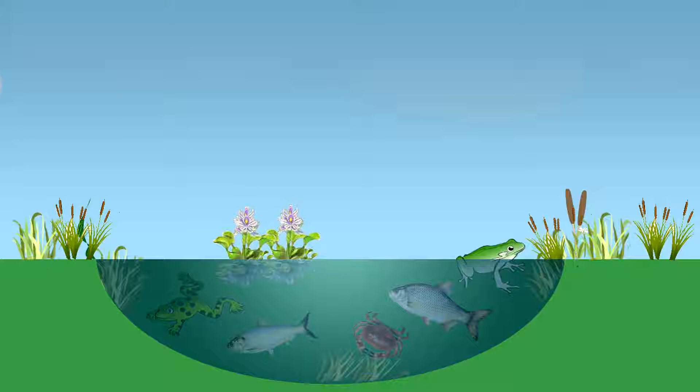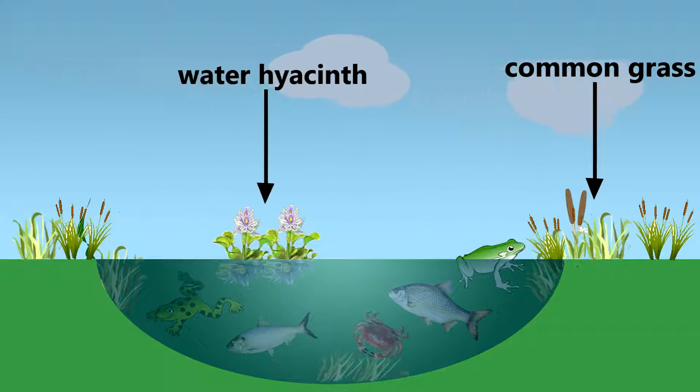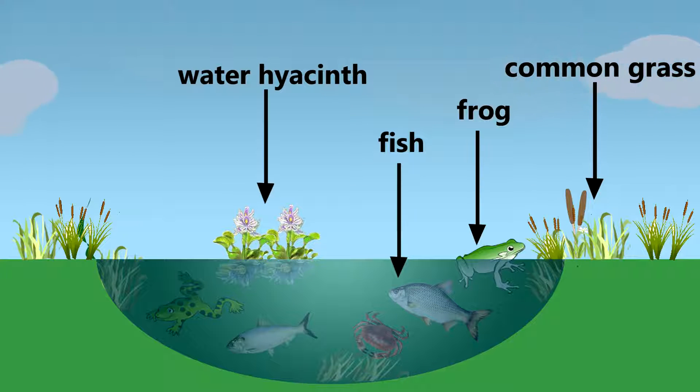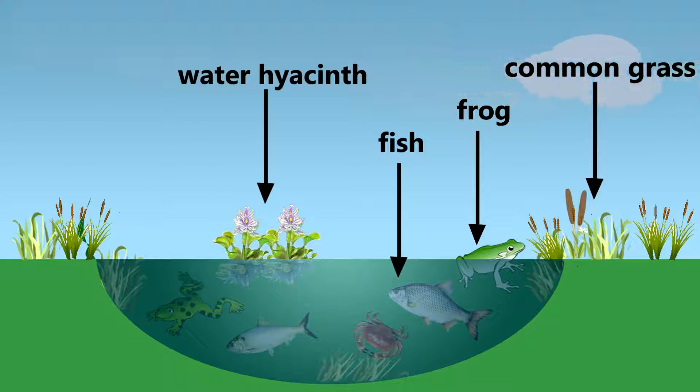Ecological diversity is of three types: alpha, beta, and gamma. The diversity seen within a community is called alpha diversity. It is denoted as the total number of species and genera of a community. Suppose in a pond, some common grasses, some water hyacinths, some fishes, and some frogs are found. The variety of life forms in this pond ecosystem is denoted as alpha diversity.